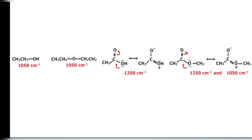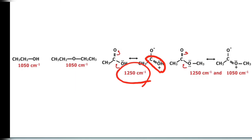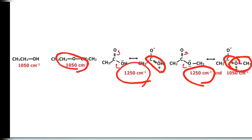To clarify: in an ester, the partial double bond C-O gives a wave number of 1250, while the pure sigma C single bond O gives a wave number of 1050. So an ester can show absorptions at both 1050 and 1250.